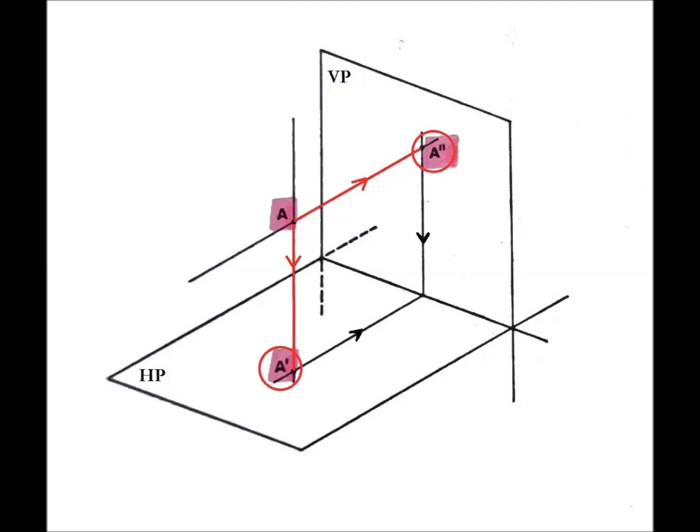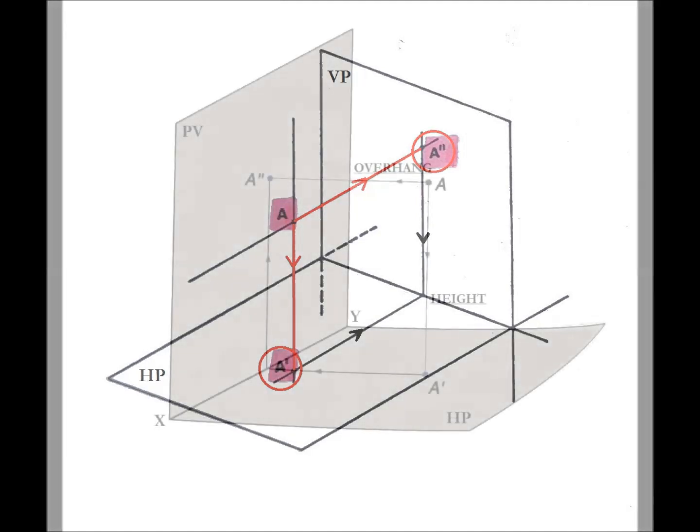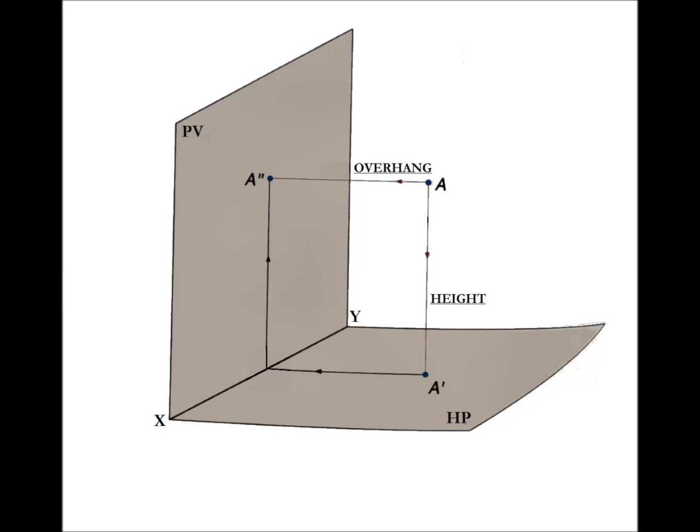From these two projections, we'll draw two further lines, perpendicular to the XY line. These segments are called reference lines. The one on the HP indicates the overhang of the point from the VP. The one on the VP indicates its height, that is its distance from the HP.